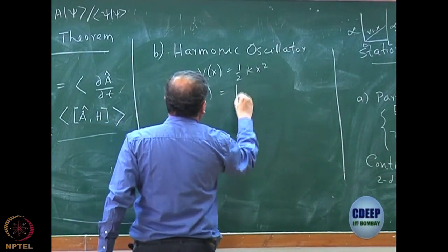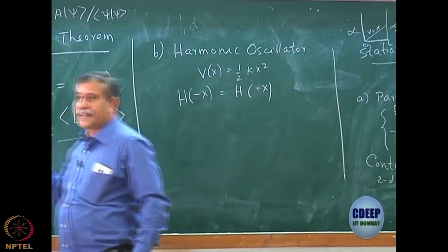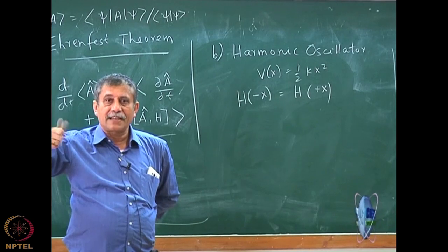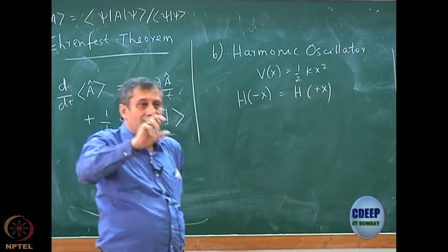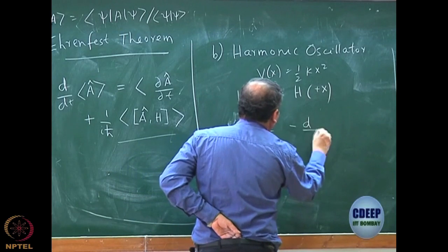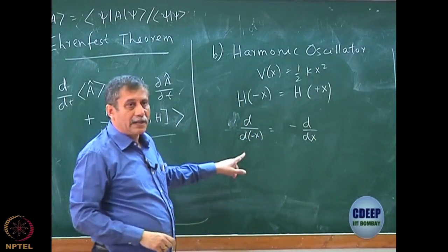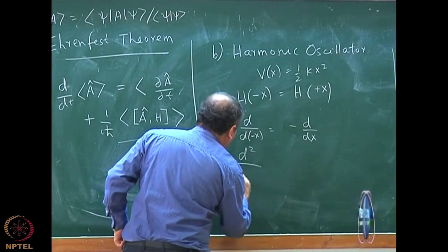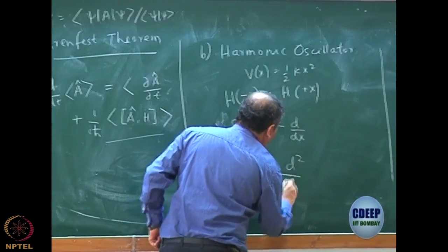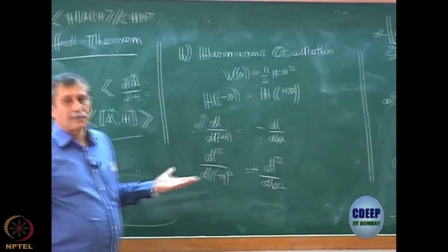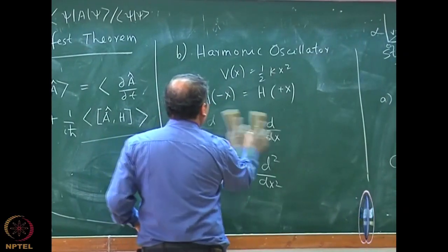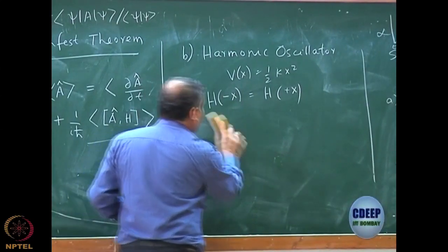Why is H even? Because kinetic energy has a second derivative operator d²/dx². If you change x to minus x, it remains invariant. The first derivative changes sign, but the second derivative does not — just like minus times minus becomes plus. So kinetic energy is always an even operator. The potential being an even operator ensures that the Hamiltonian is even — this is called parity invariance.